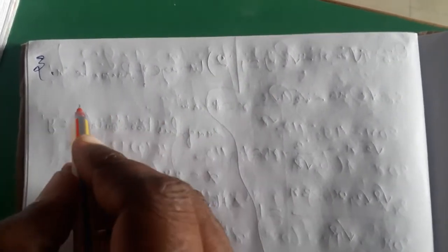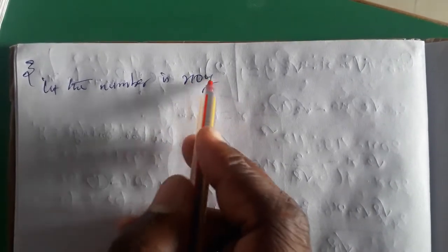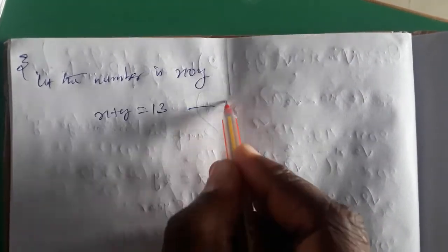Going to see the solution. Third question — take it. Let the number be x, 0, y — because the middle digit is 0, as given. Adding the other digits, that means x and y: x plus y equals 13.